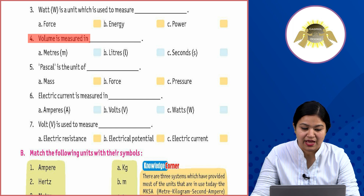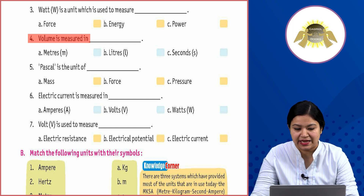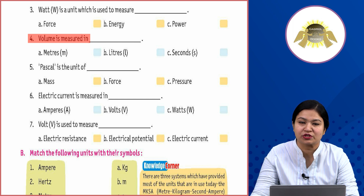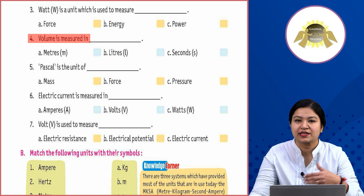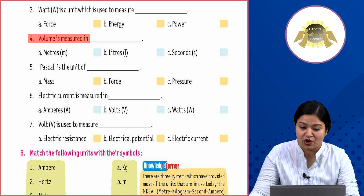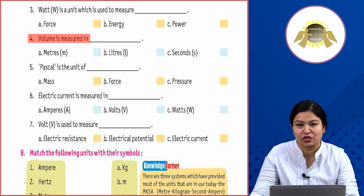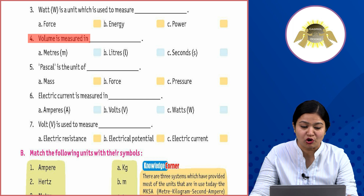Fourth: Volume is measured in — option A: meters, option B: liters, option C: seconds. The correct answer is option B, liters. Meters distance ko measure karne ke liye use karte hain, aur seconds time ko — volume ko hum liters mein measure karte hain.